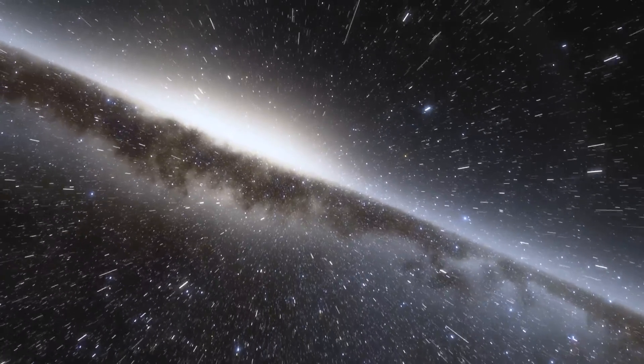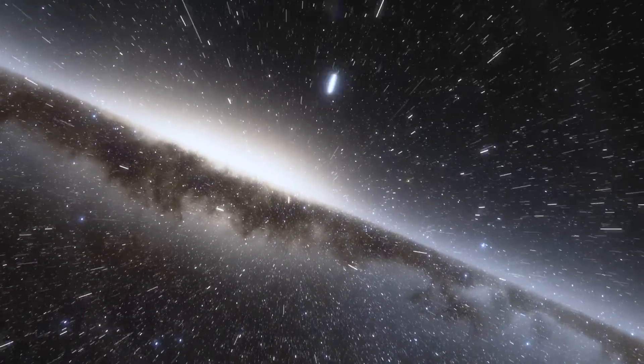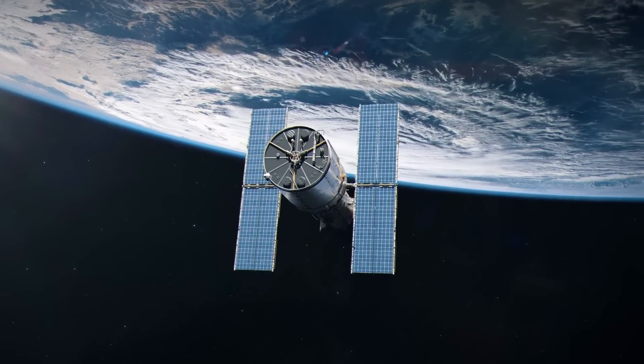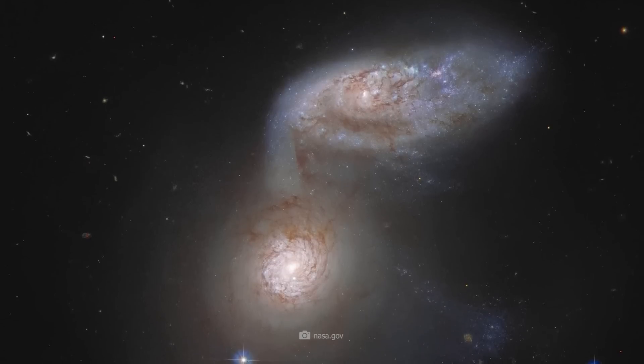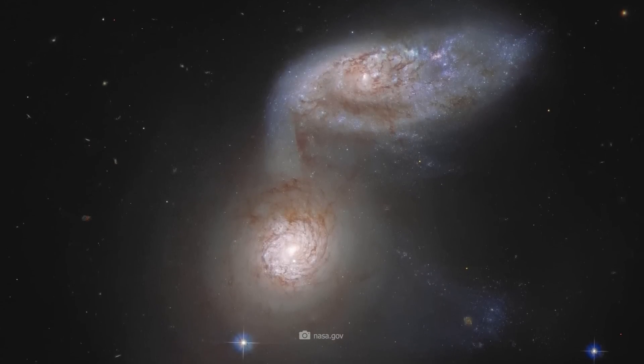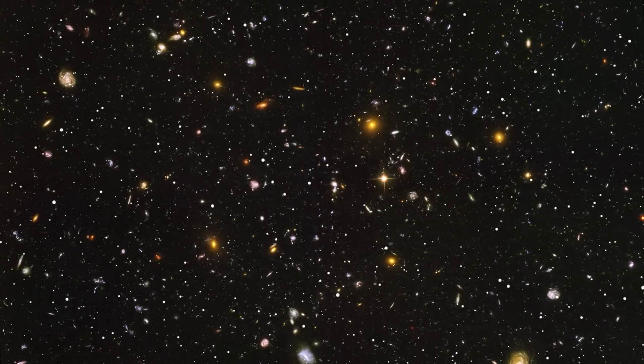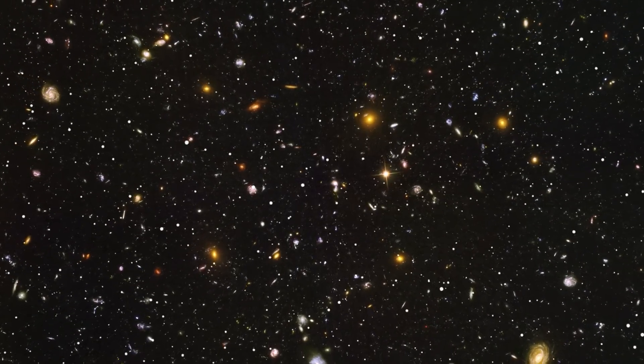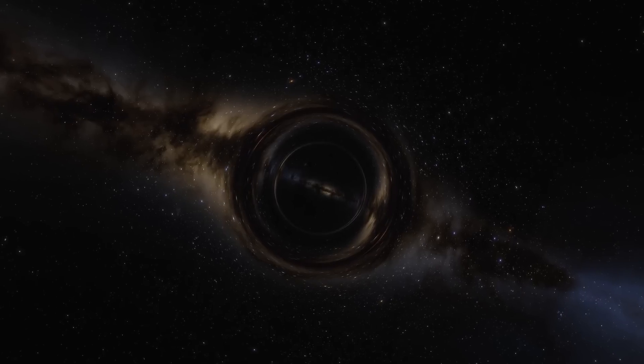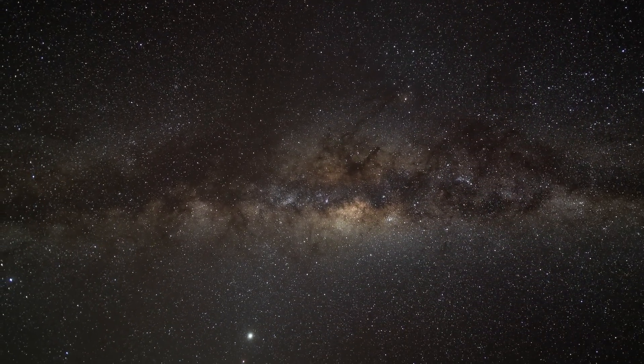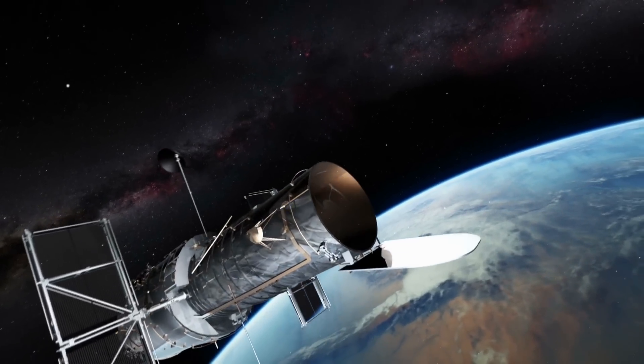Hubble has made over 1.3 million observations in his career to date, collecting more than 150 terabytes of data. This data has led to over 15,000 scientific publications, some of which have proven that the universe is expanding at an accelerated rate and that black holes really do exist. But Hubble has also shocked and seen many things over the last 33 years that it was not designed to see.